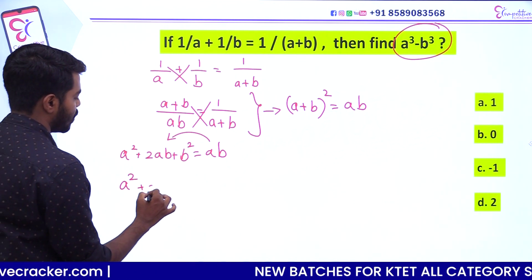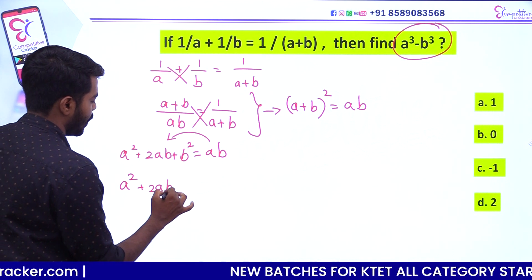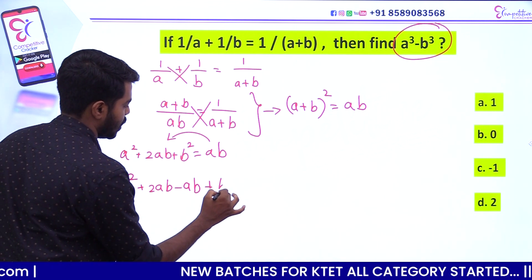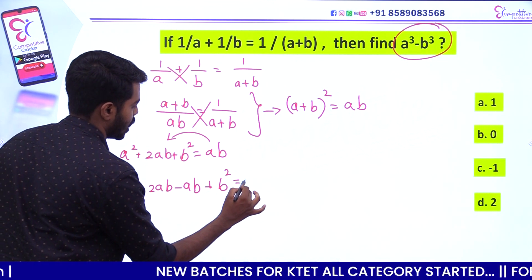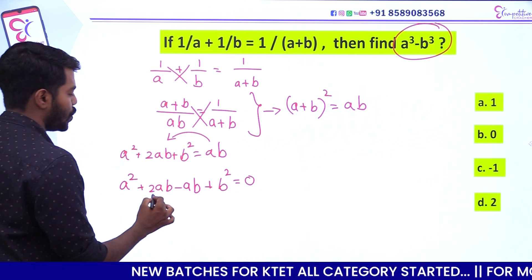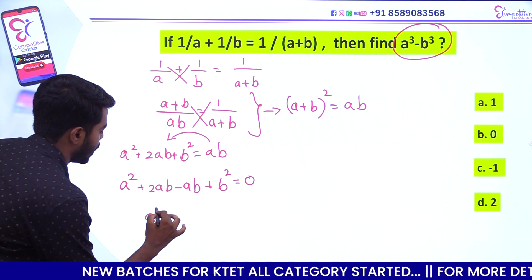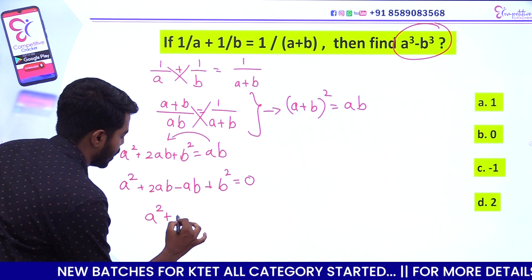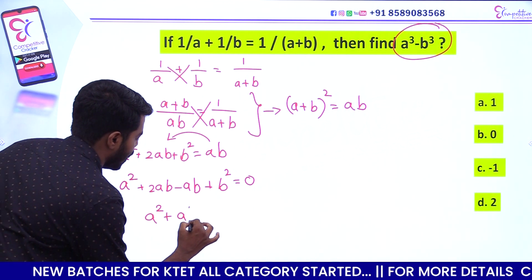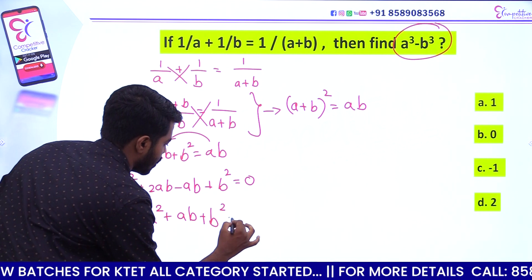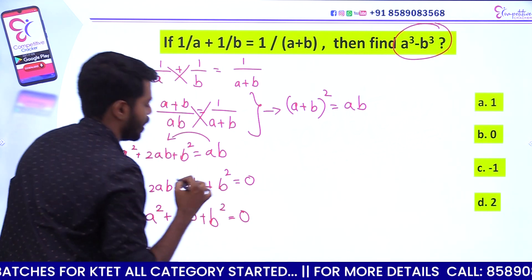That is, a square plus 2ab minus ab plus b square is equal to 0. Now, a cube minus b cube is equal to a square plus ab plus b square is equal to 0.